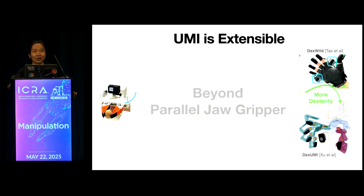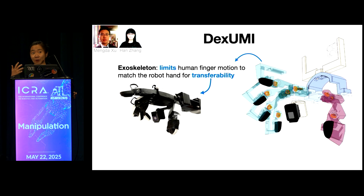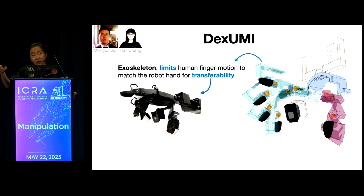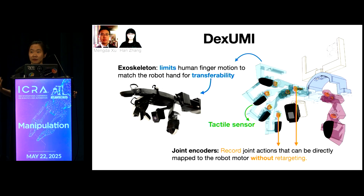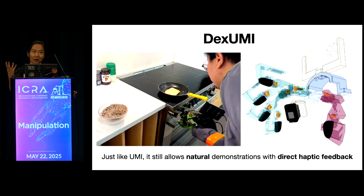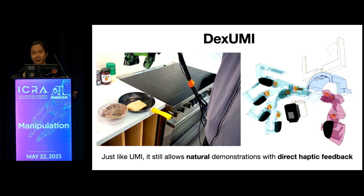More recently, there are new designs for multi-fingered dexterous hands going beyond parallel jaw grippers. In the DEXUMI project, we designed a wearable exoskeleton that people can wear to collect data. The exoskeleton structure limits finger movement so that collected data can be directly mapped to the target robot hand without any retargeting. We add joint encoders to record precise joint-space actions that map one-to-one to robot motors, and tactile sensors to record contact information during interaction. Just like UMI, you can wear this exoskeleton in different environments, collect data naturally, and feel direct feedback.